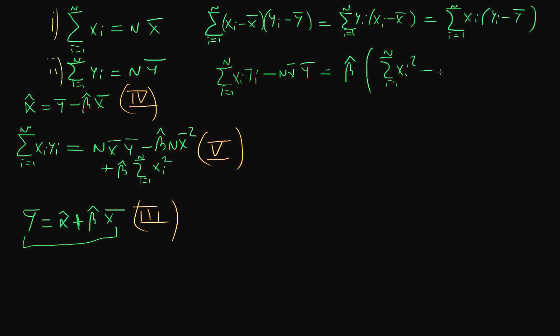So then that allows us to divide through by this stuff on the right hand side, and that means that we get beta hat being equal to the sum of xi yi minus n x bar y bar from i equals 1 to n, all over the sum of i equals 1 to n of xi squared minus n x bar squared.